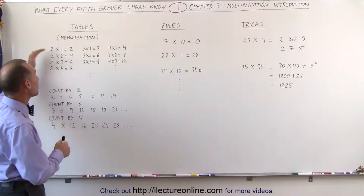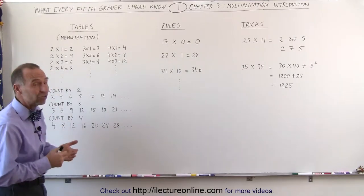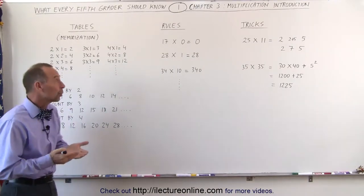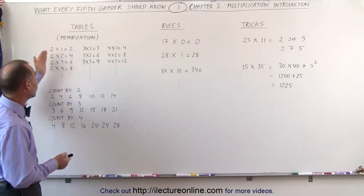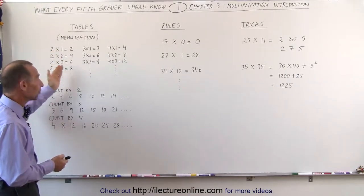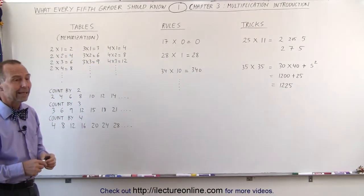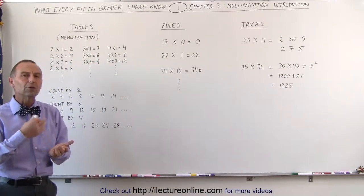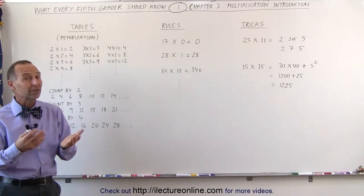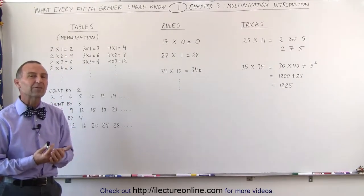We should really try to memorize the multiplication tables from 1 to 10. In other words, we need to know what 2 times 1 is, 2 times 2, 2 times 3, 2 times 4, and so forth. Then we move on to number 3, the number 4, all the way to the number 10. And we should practice that over and over again. The more we practice, the more we're able to memorize things.